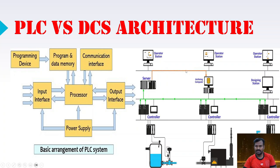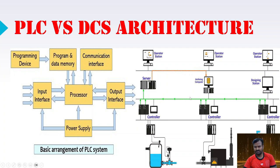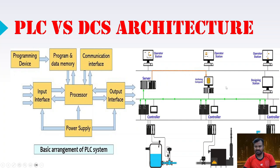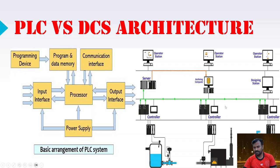The operator station is where the operator monitors the overall process across the entire plant. Different areas or zones with different controllers are connected to a common bus — such as Profibus or Ethernet. This communication network is very important since devices and controllers are placed far apart. A high-speed network like HART, Profibus, or Ethernet is required. This is the basic architecture of a DCS.